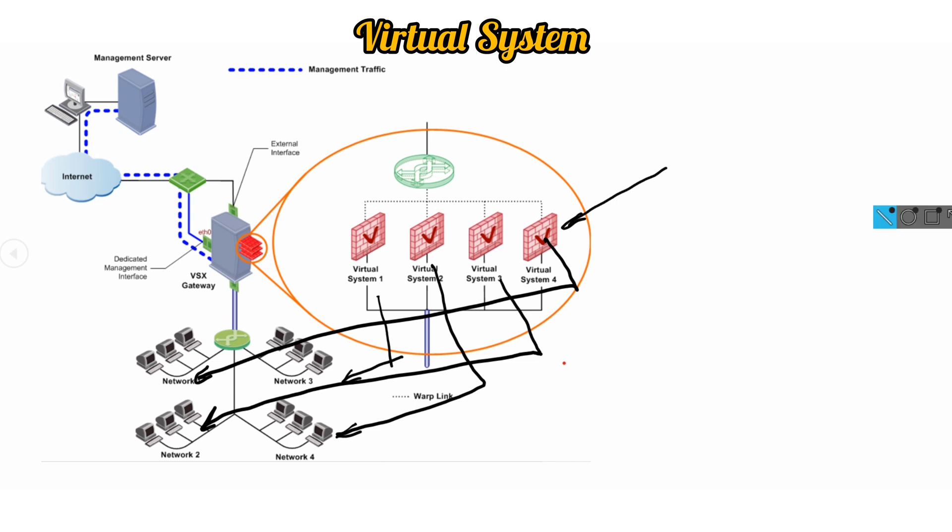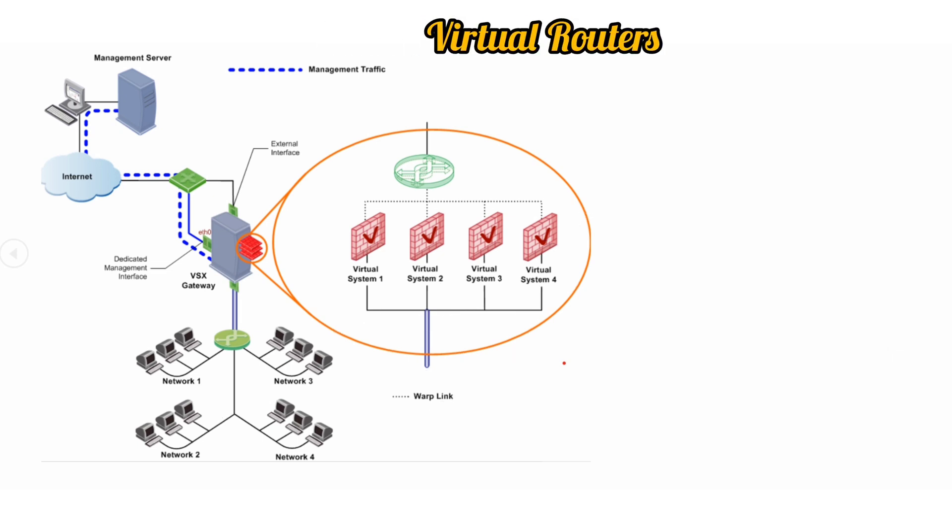Now let's understand what is virtual router. You can see on the screen this is your virtual router. Virtual router is an independent routing domain within a VSX gateway that performs the functionality of physical routers. Basically whenever you want to route the traffic between virtual systems or virtual devices, you can use virtual router. Virtual router supports dynamic routing as well and performs all sorts of routing functions. It's like a physical router.